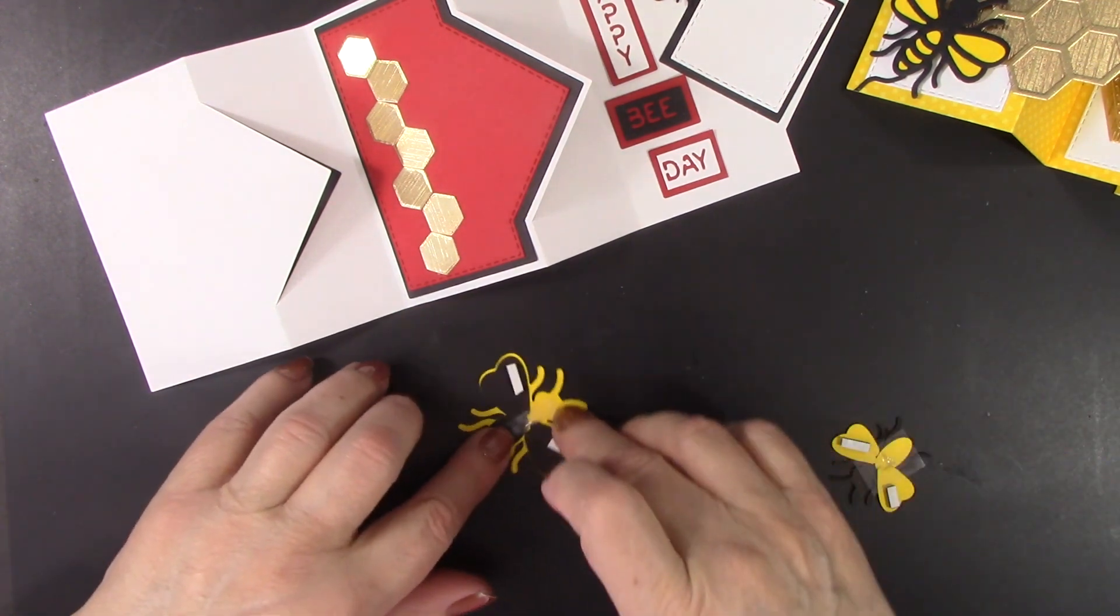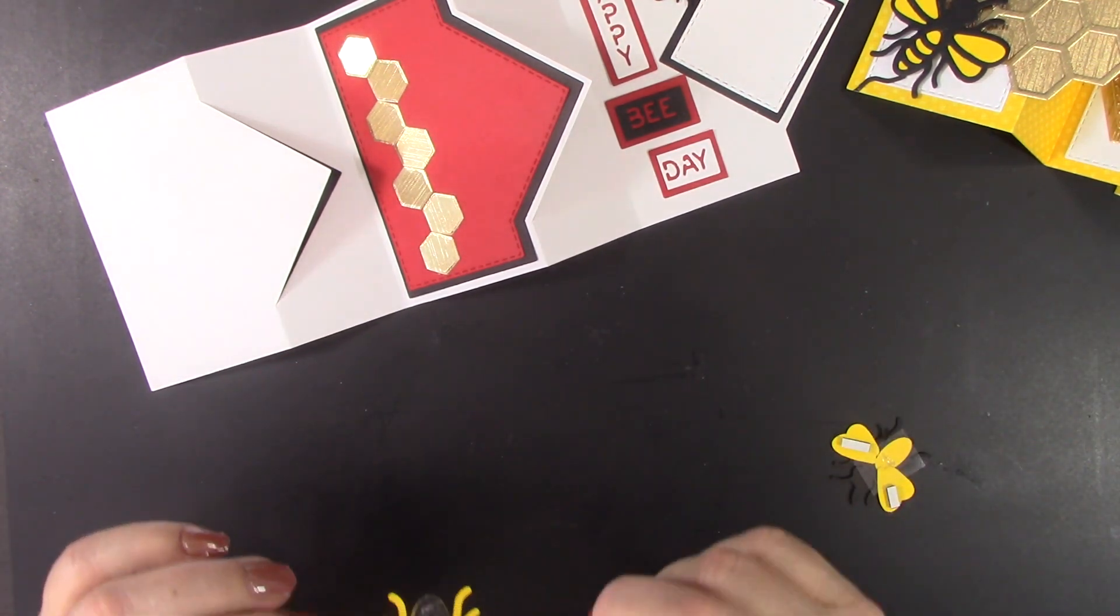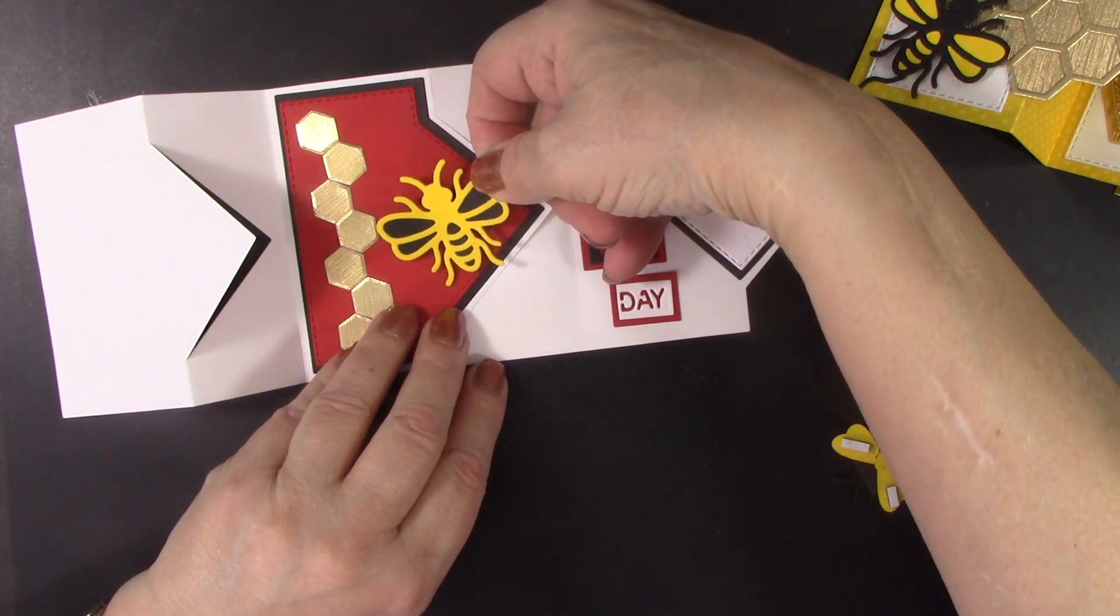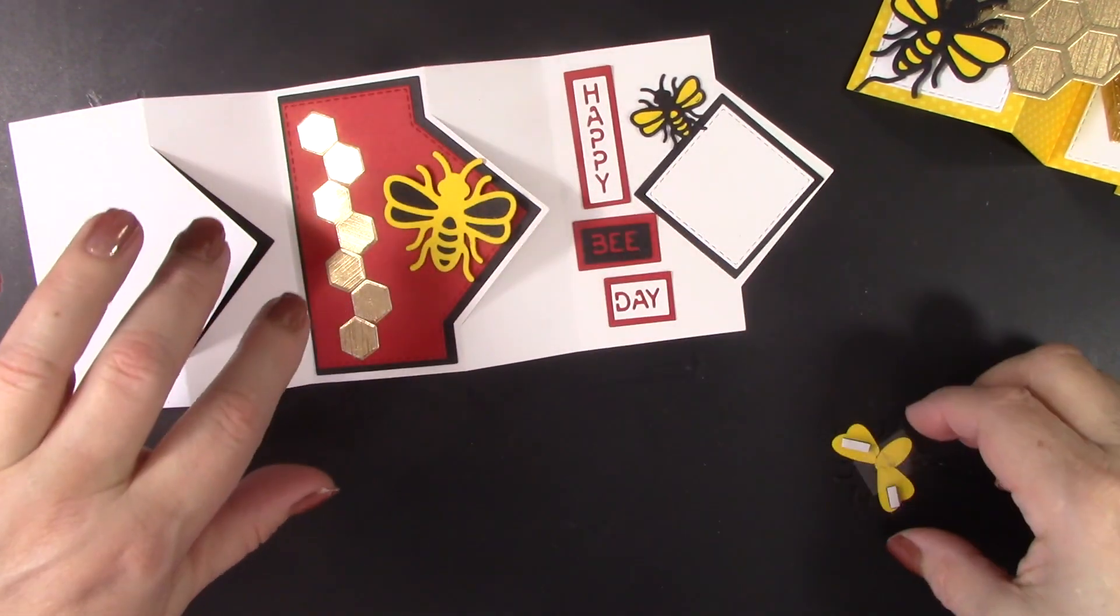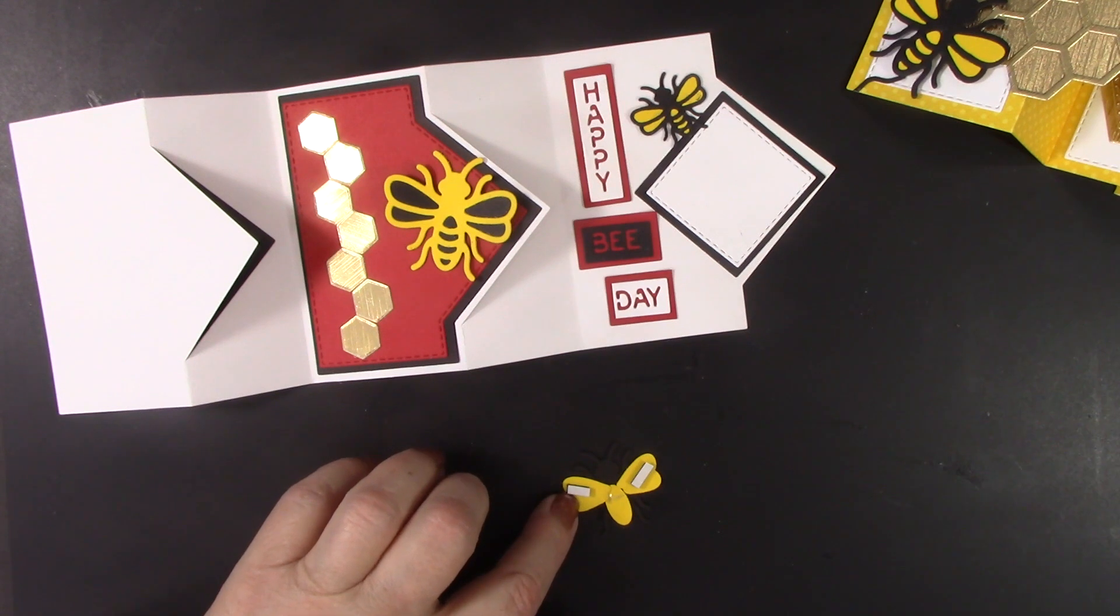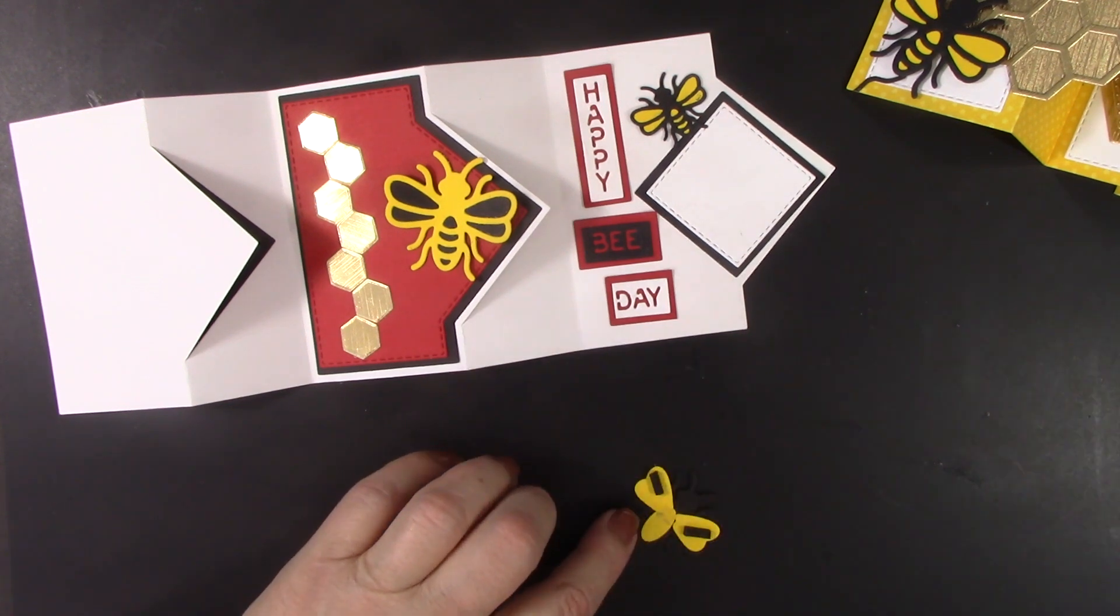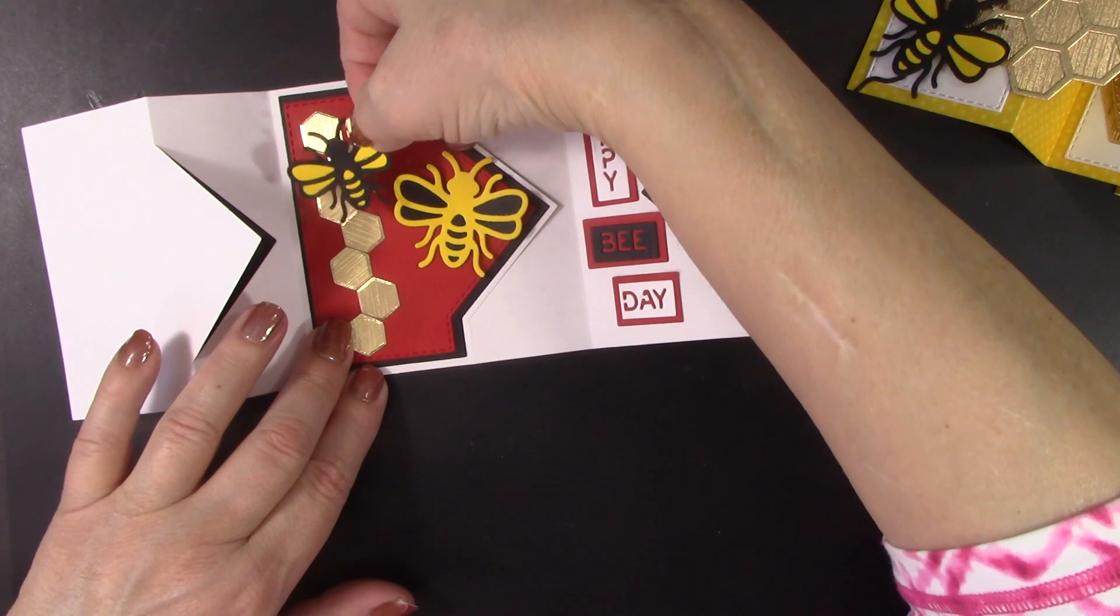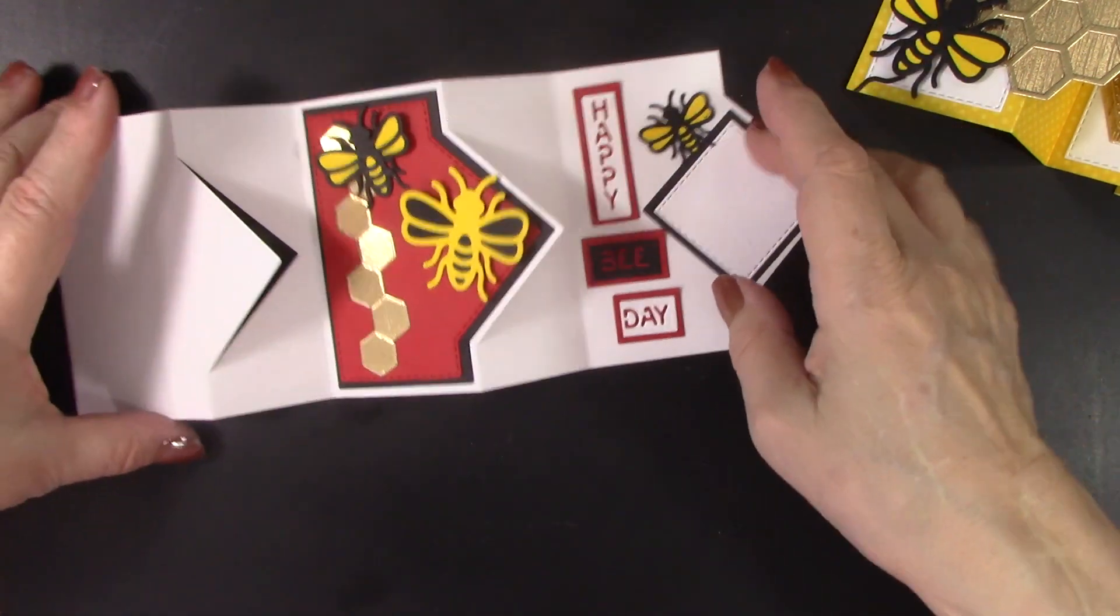I thought it would be fun to have the wings on this one propped up. So I put some two-sided tape adhesive strips on the wings. This way on this one. His body is going to be down, but his wings are going to be up. And then I am doing that on this one as well. So I have a glue dot in the middle and some more of that adhesive raised foam strips on his wings. Two bees there.